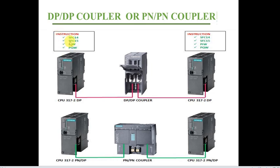The instructions for this type are System Function 14 and System Function 50 for reading and writing. You can also directly use the input word, output word, input byte, or output byte. This applies to Profibus with the coupler in place.